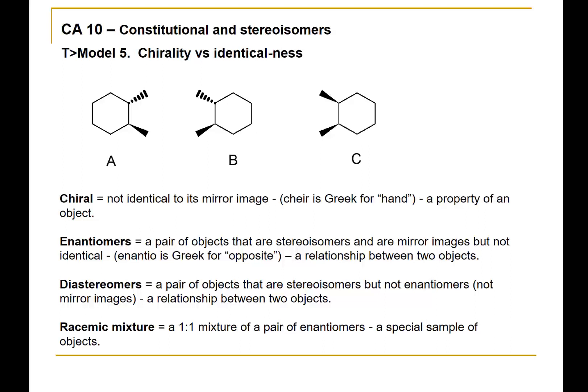Chiral comes from the Greek word 'cheiro,' which signifies hand. Your hands are chiral because your right hand is in a sense a mirror image of your left hand, yet the two are not superposable.